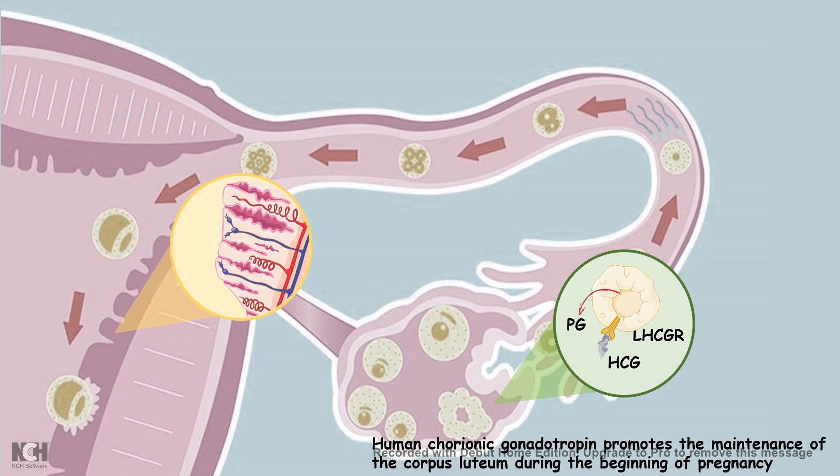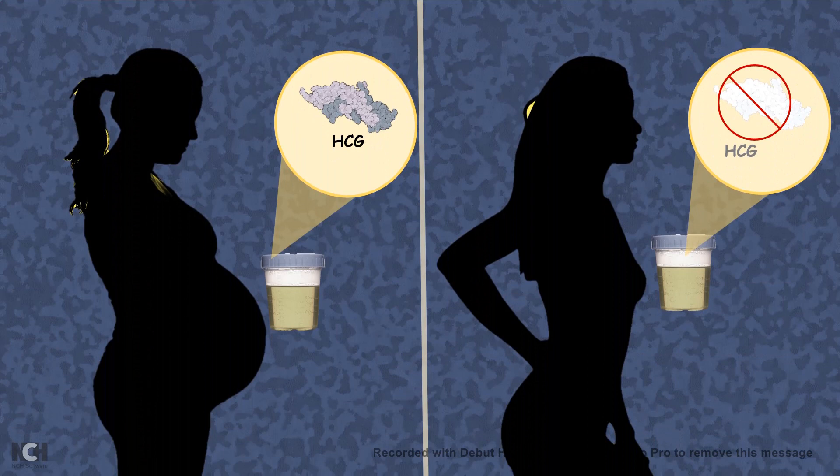The basic take-home message is that a pregnant woman should have human chorionic gonadotropin in her urine, and a woman who is not pregnant should not have HCG in her urine. The presence of human chorionic gonadotropin is going to be detected using an antibody-antigen interaction based method.